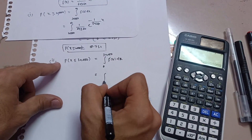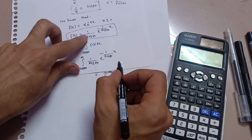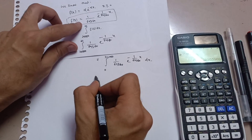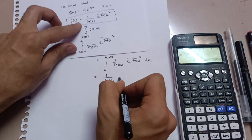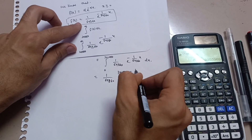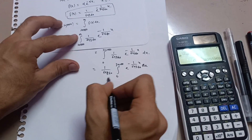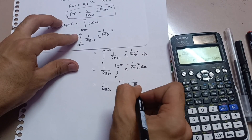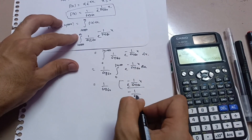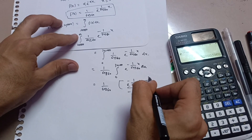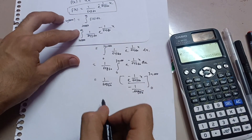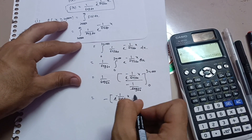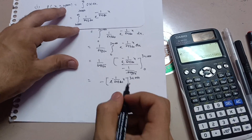Substituting f(x), we integrate from zero to thirty thousand of (1/64,360) times e to the power minus (1/64,360) times x dx. Taking out the constant, the integration gives e to the power minus (1/64,360)x divided by minus (1/64,360), with limits zero to thirty thousand. The 64,360 terms cancel, leaving minus e to the power minus (1/64,360)x, evaluated from zero to thirty thousand.